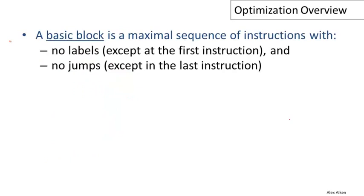Optimizations typically work on groups of statements, and one of the most important and useful statement groupings is the basic block. A basic block is a maximal sequence of instructions with two properties: there are no labels except possibly for the very first instruction, and there are no jumps anywhere in the sequence except possibly for the last instruction.